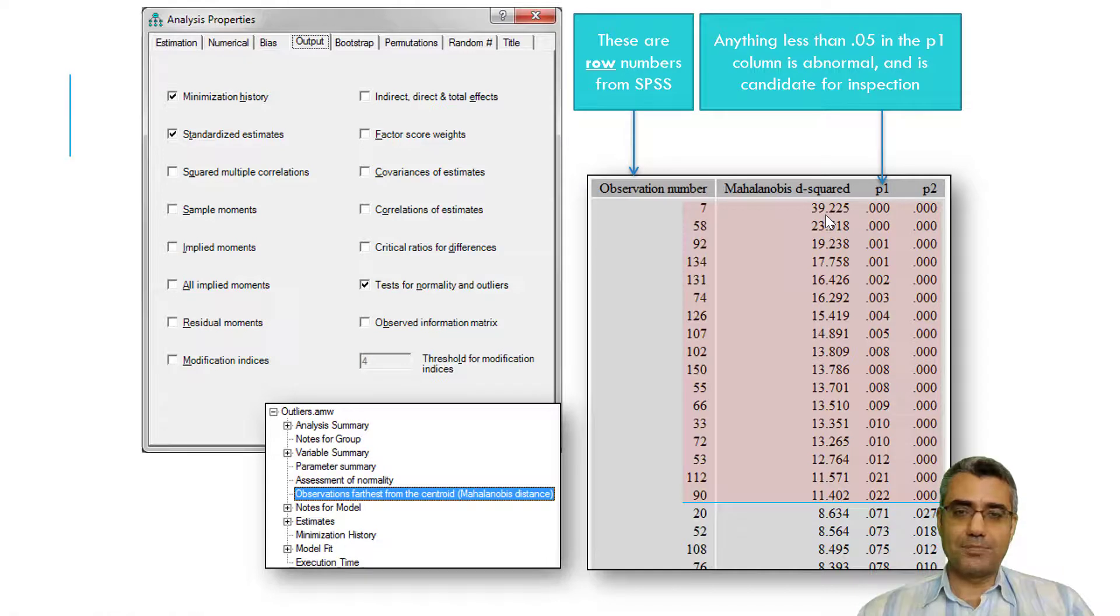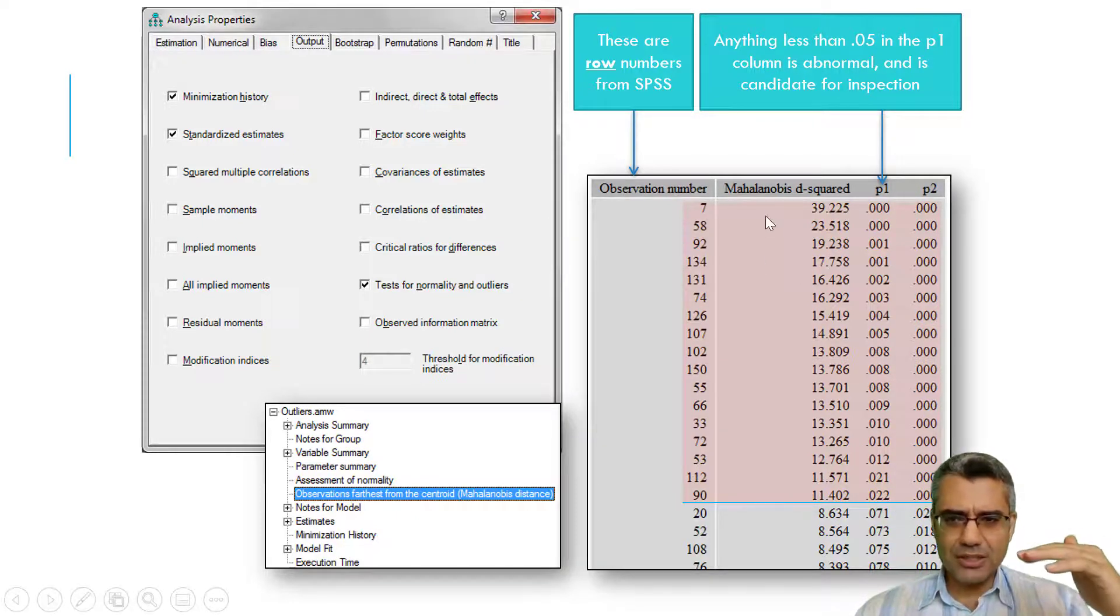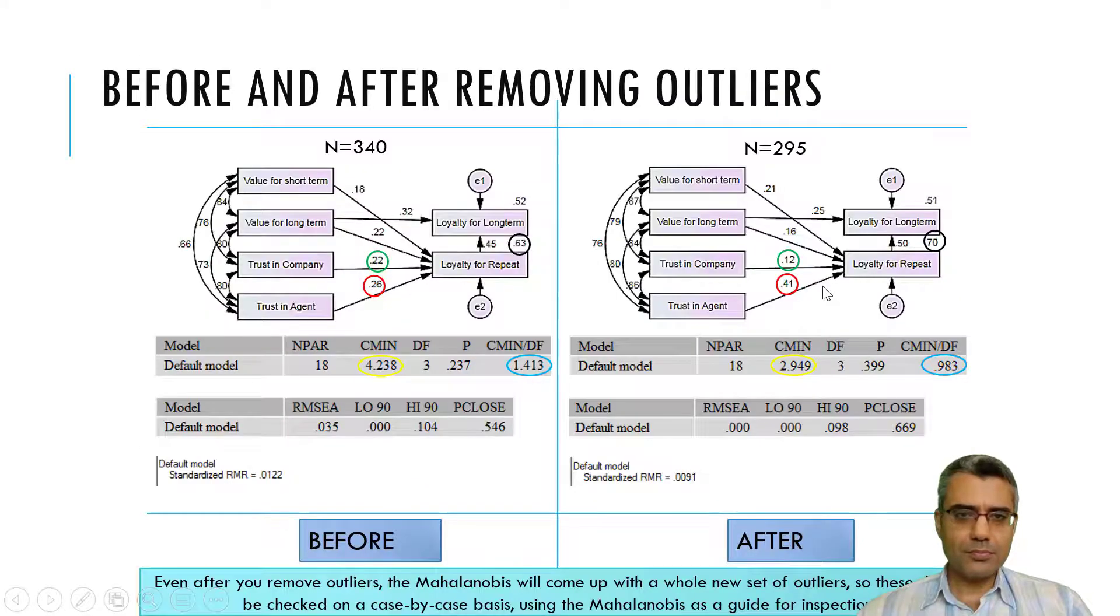But just a rule of thumb, for example, case number seven, the Mahalanobis D squared value is 39, then case 58 is 23, then 92 is 19. So you see, it's some sort of a break event. It means it suddenly dropped from 39 to 23 and then to 19. And then after that, they are very close: 19 to 17, 17 to 16, 16, 15, 14. So if I want to remove, I consider seven as an outlier, because it's far from the next case. Even case 58, okay, if you want remove it, but the rest, be careful.